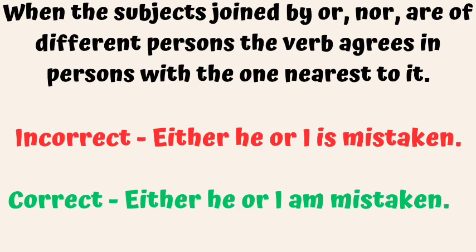When the subjects joined by or, nor are of different persons, the verb agrees in person with the one nearest to it. For example, 'Either he or I is mistaken' is incorrect. 'Either he or I am mistaken' is correct.